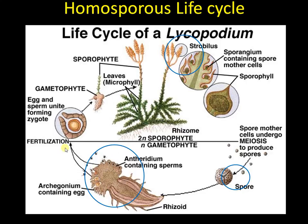Sperms and egg fertilize in the presence of water and form the zygote, and the zygote further divides to form the sporophyte and later the mature sporophyte. So in a homosporous life cycle, the key points are: the spore-bearing structure, a single type of spore, and a gametophyte having both antheridium and archegonium.